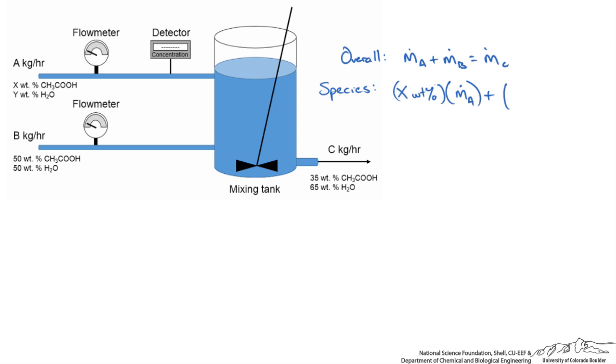Plus the composition of B which we know is 0.5 times our mass flow rate of B. This equals what comes out. This is specified, so 35 weight percent, our rate is 0.35 times our mass flow rate of C.